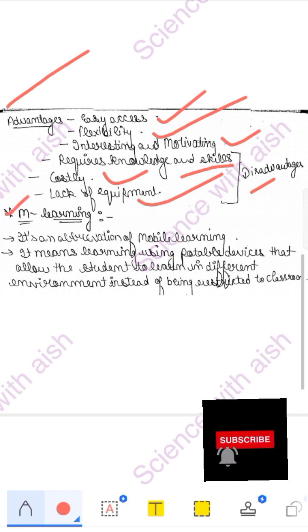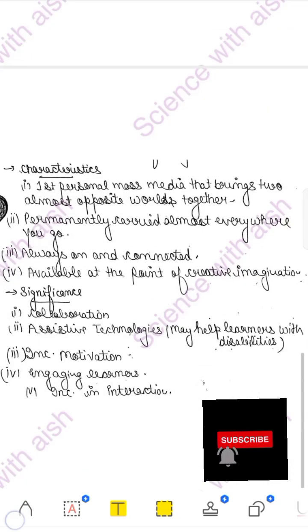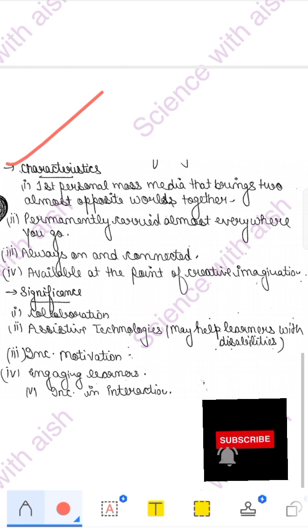Next is M-Learning. M-Learning is mobile learning. When you study through mobile, like you are using mobile, you open YouTube, you are reading things. It is an abbreviation of mobile learning. It means learning using portable devices like you have a phone or iPhone. It allows students to learn in different environments, instead of being restricted to classroom. You can use the phone to take it anywhere and study. Next comes characteristics. It is the first personal mass media that brings two almost opposite worlds together.